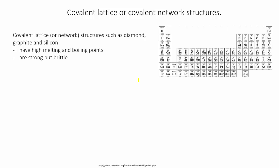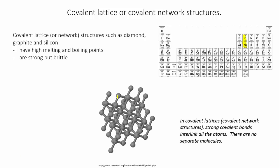If we look at covalent lattice structures, however, they are no longer made of separate molecules. Instead, the atoms are all interlinked by strong covalent bonds. This means these substances, such as diamond and graphite and silicon, can have very high melting points and are much stronger, though they're still brittle.